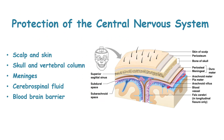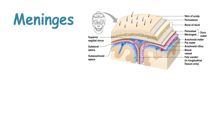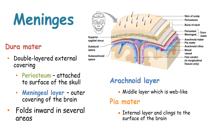The nervous system has a protection mechanism against any external damage. This protection comprises of the scalp and the skin, the skull and vertebral column, the meninges, cerebrospinal fluid, and the blood-brain barrier. The meninges have three main parts: the dura mater, the arachnoid mater, and the pia mater.